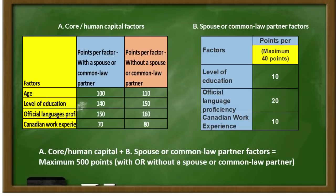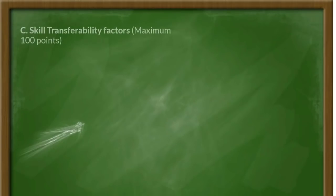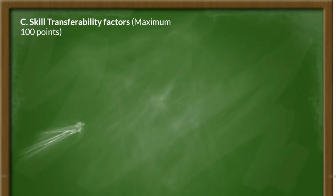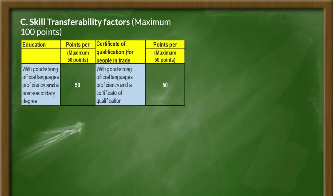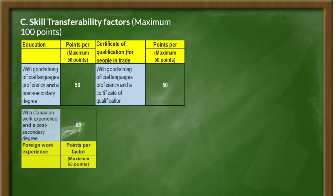The third factor is the skill transferability factor, for which you can get a maximum of 100 points. These are divided into 3 sub-factors: first, language proficiency combined with a post-secondary degree — up to 50 points; second, a certificate of qualification combined with language proficiency; and third, Canadian work experience combined with a post-secondary degree — up to 50 points.